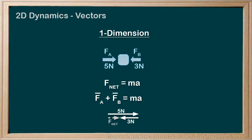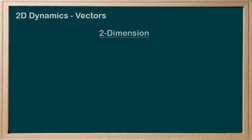The net force is 2 newtons to the right. We can use this to determine the acceleration or whatever we need for the rest of the problem. Now let's compare this with a two-dimensional problem. In a 2D situation, we might have two forces again: FA equals 5 newtons east, and this time FB equals 3 newtons north. In a 2D situation, the forces are no longer along a single line — we've added a second dimension.